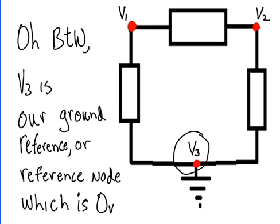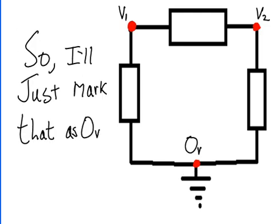Oh, by the way, V3 is our ground reference, or reference node, which is zero volts. So I'll just mark that as zero volts.